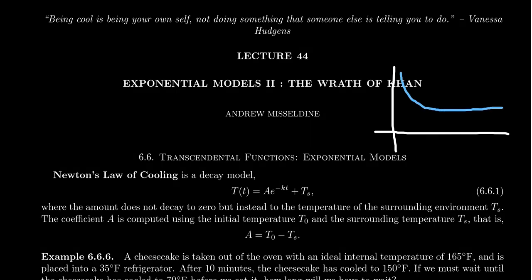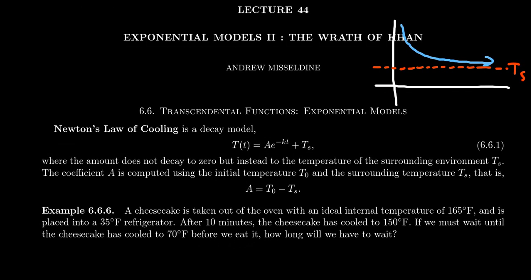But it doesn't cool down towards zero. You're going to cool down towards some asymptotic value that potentially could be non-zero. That is, it would be the temperature of the surrounding area. We'll call that T sub S for a moment. And this gives us Newton's law of cooling, which the temperature of our object equals some coefficient A times E to the negative KT plus TS, where TS is going to represent the surrounding temperature.